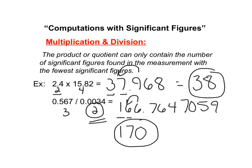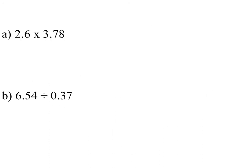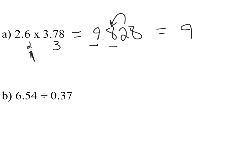That zero is just holding the 1's place. Now try these two problems. For part A: 2.6 has two significant figures and 3.78 has three, so I'm only allowed two in my answer. Computing gives 9.828. Rounding to two sig figs: the 2 does not round up the 8, so my answer is 9.8.